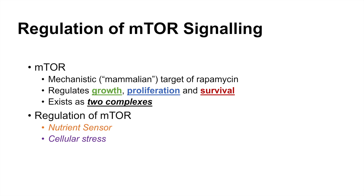Hey everyone. This is where we're going to talk about regulation of the mTOR signaling pathway. So just a quick review: mTOR is known as mechanistic or mammalian target of rapamycin, and mTOR is critically important in regulating growth, proliferation, and survival.